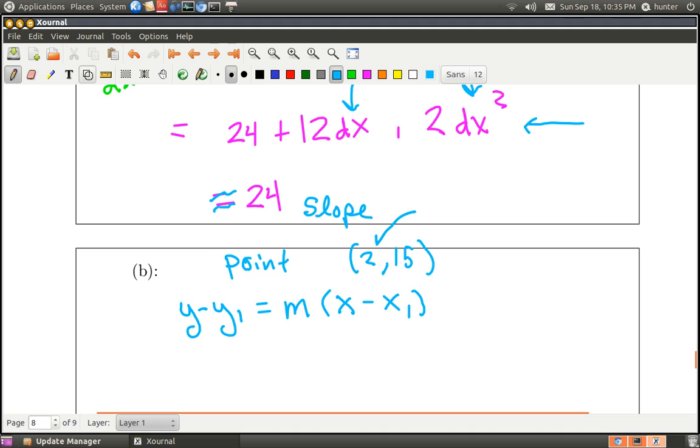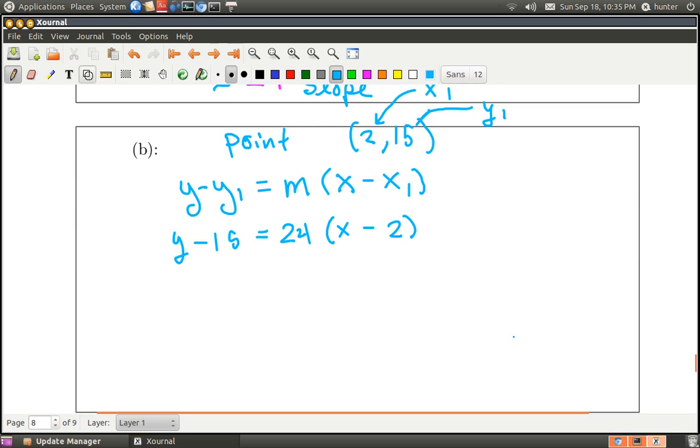And of course 2 is x1 and 15 is y1. So let's just figure out what we've got here. So y minus 15 is equal to 24 times x minus 2. And now we just fool around with it. You can even leave it like that if you want. So y is equal to 24x minus, so that goes in there, and this gives me minus 48. And then I add 15 to both sides, so plus 15.